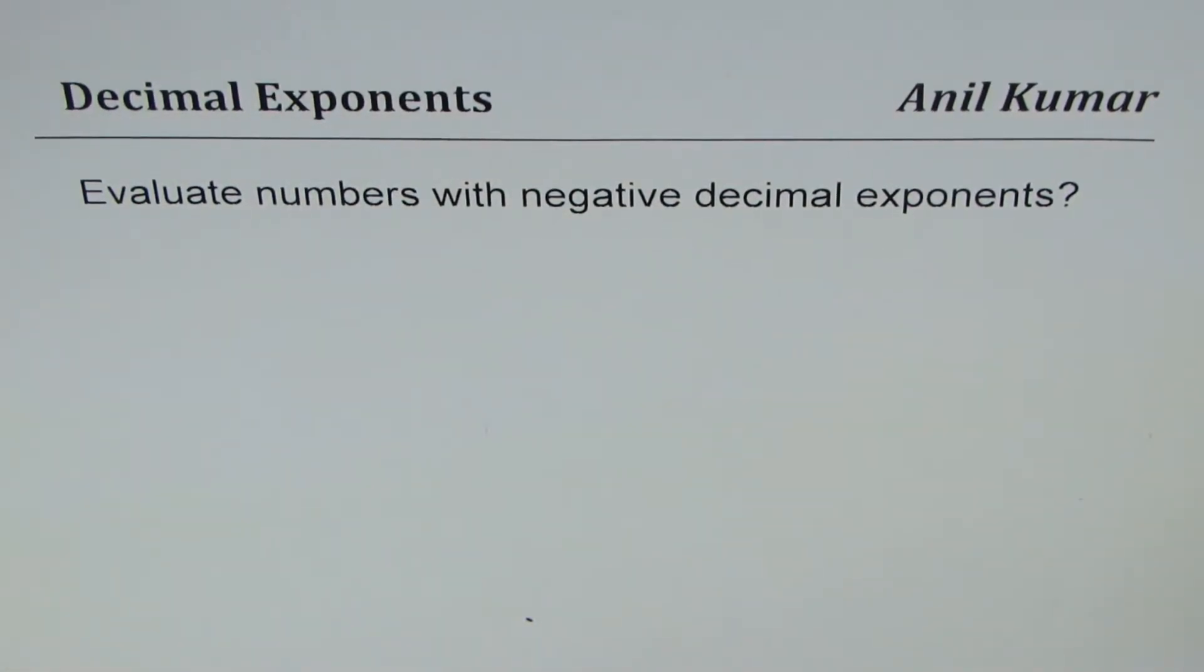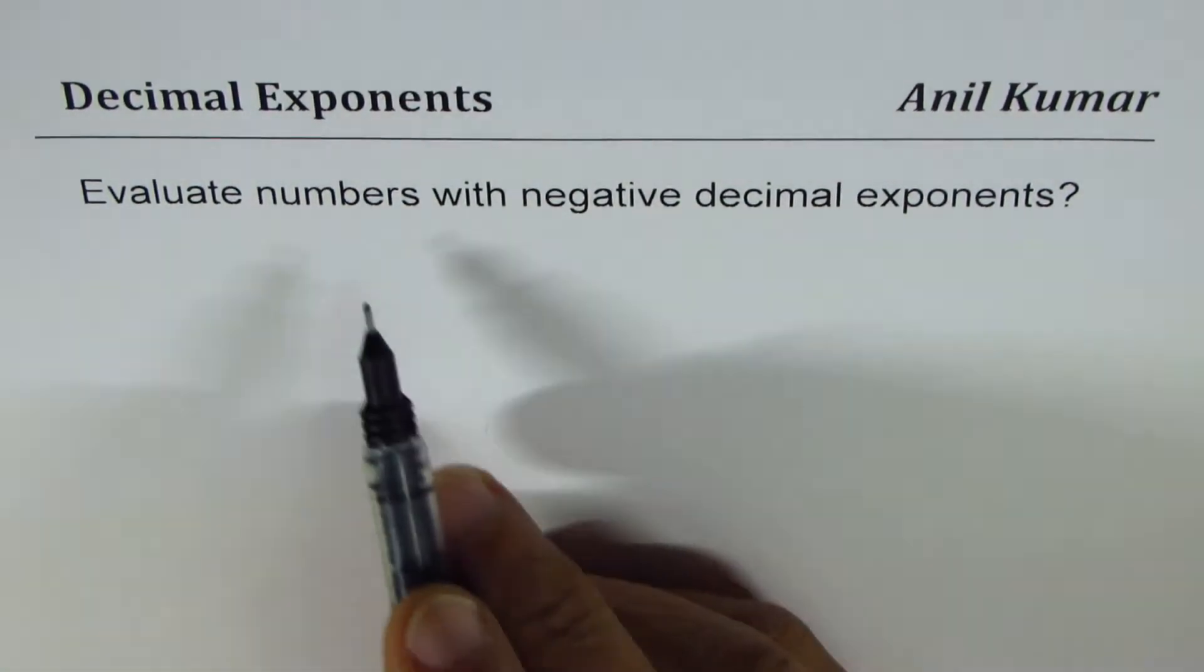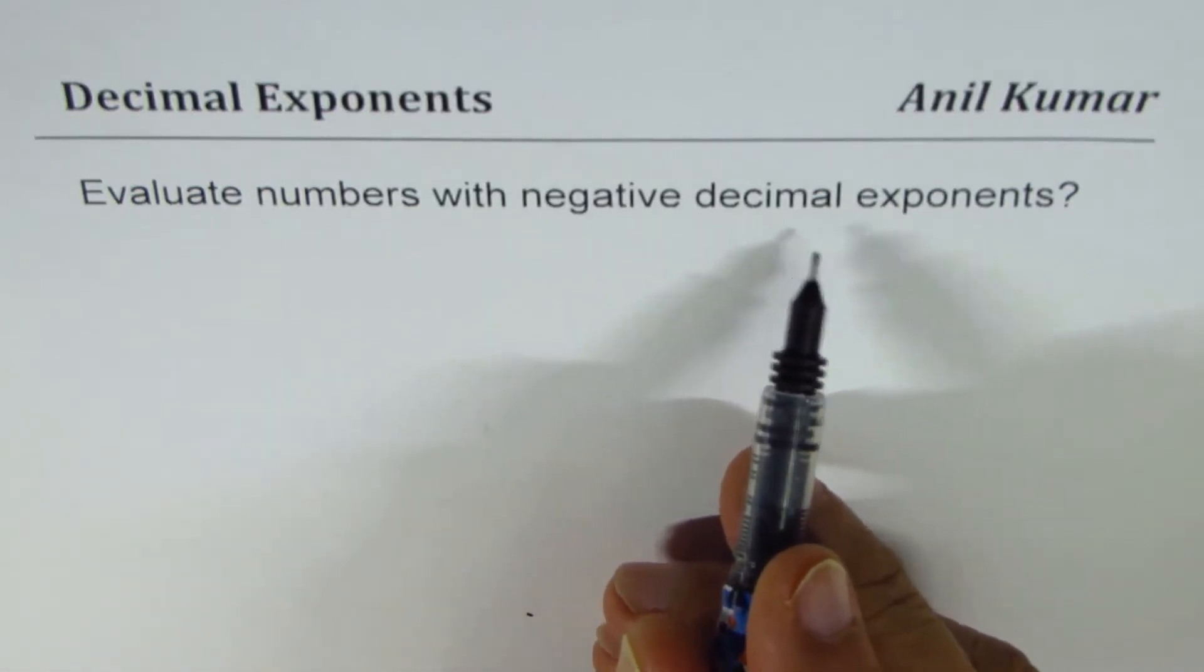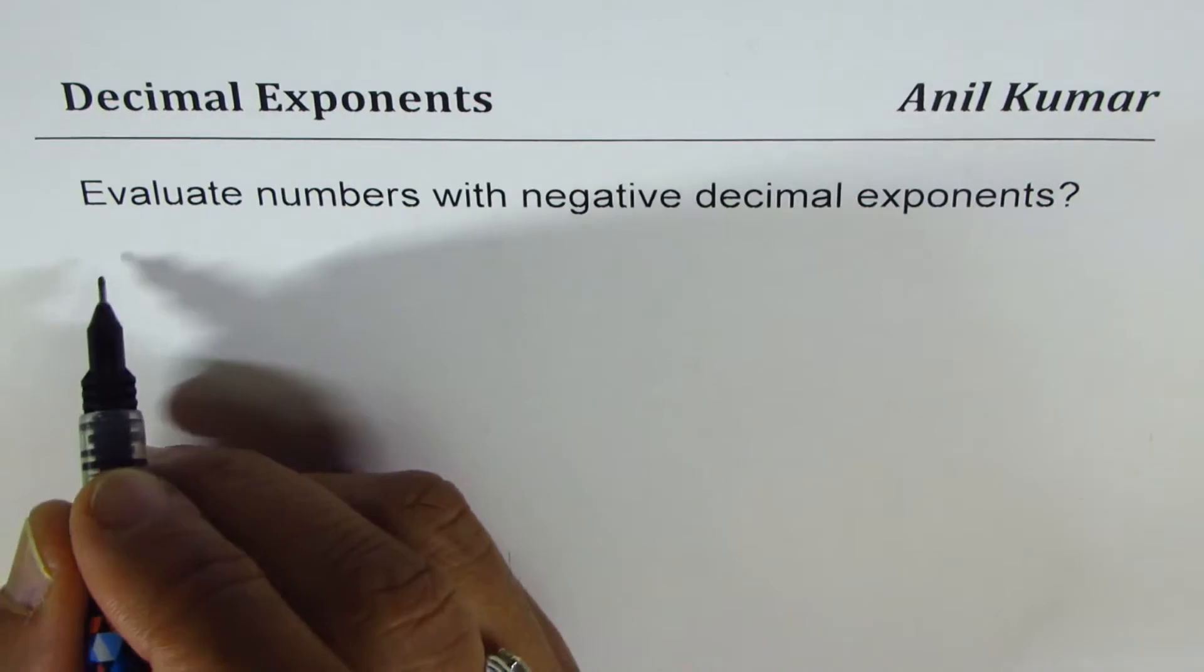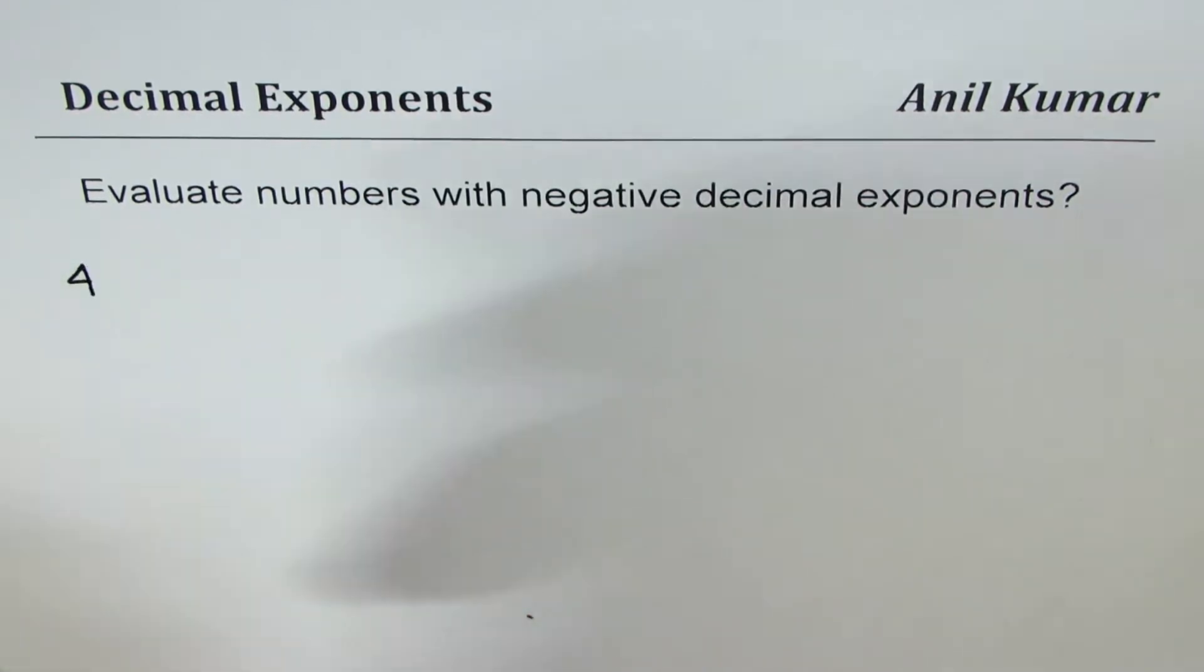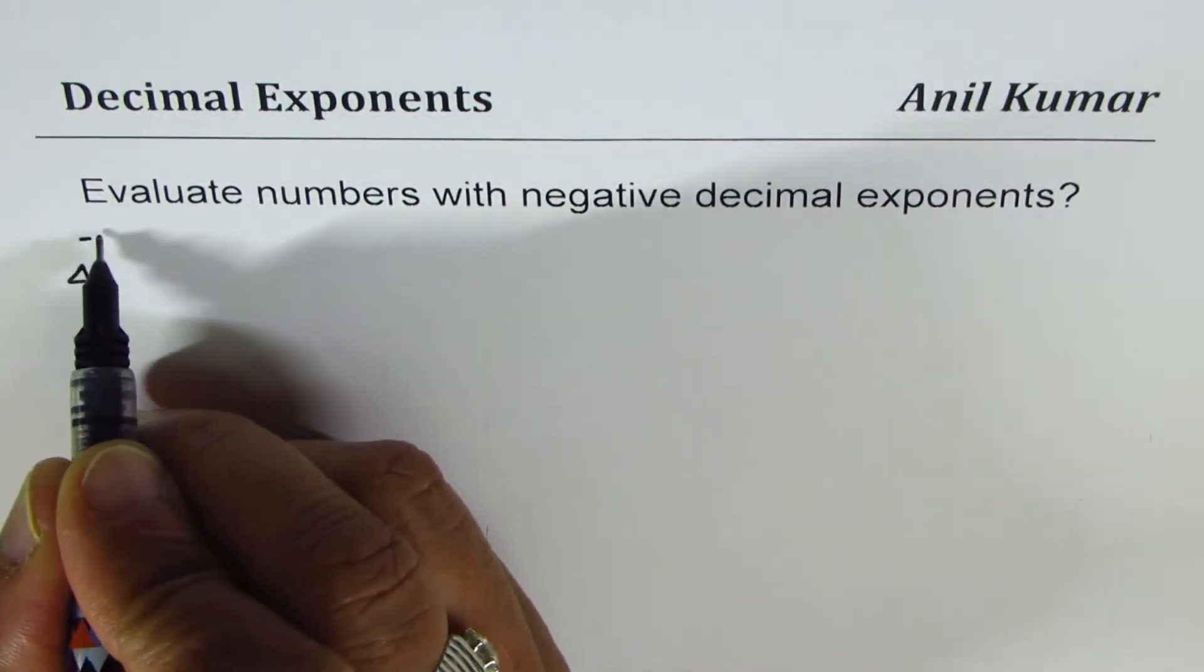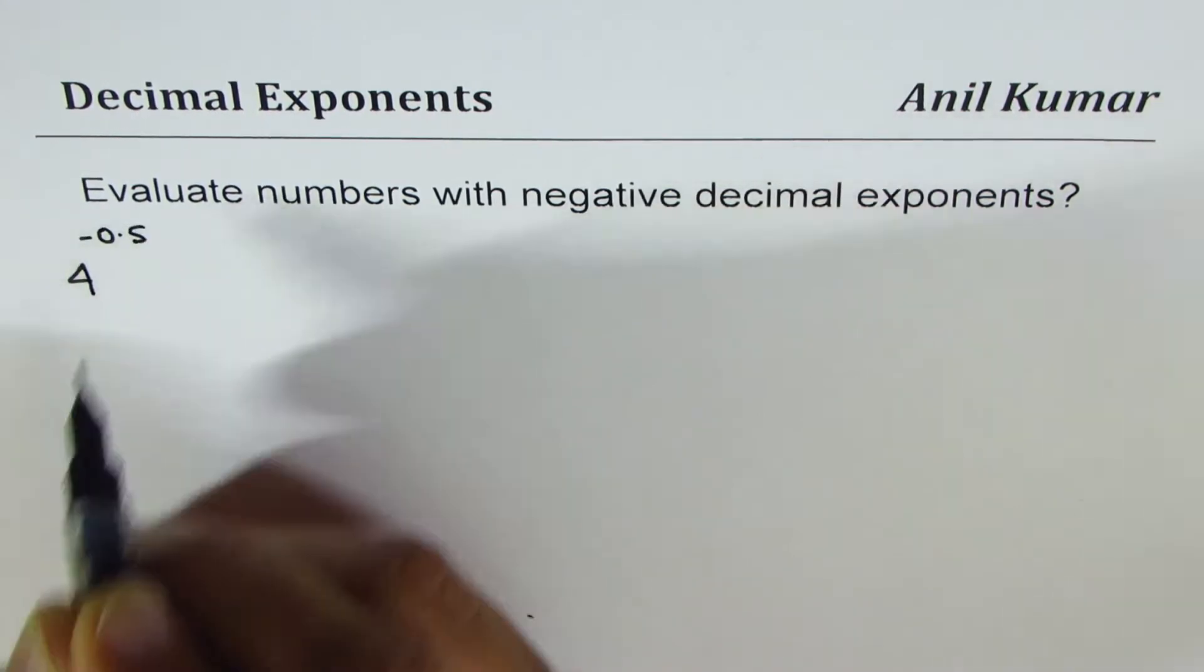I'm Anil Kumar and in this video we'll take up some numbers with negative decimal exponents and then evaluate them. So let's begin with numbers like perfect squares: 4 to the power of minus 0.5.